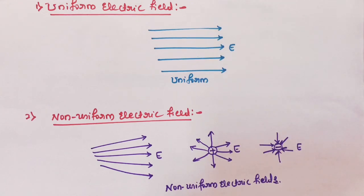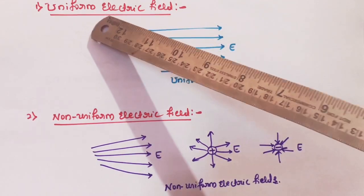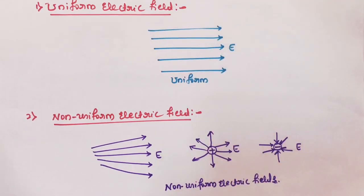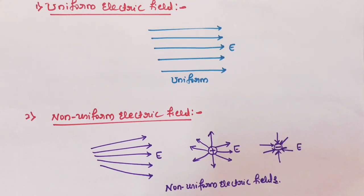Electric field can be divided into two types: uniform electric field and non-uniform electric field. Uniform electric field — the word itself says the field is distributed uniformly. It is defined as the field in which the force on a test charge is the same at all points. If the force on a test charge is the same at all points in an electric field, that type of field is said to be uniform electric field.